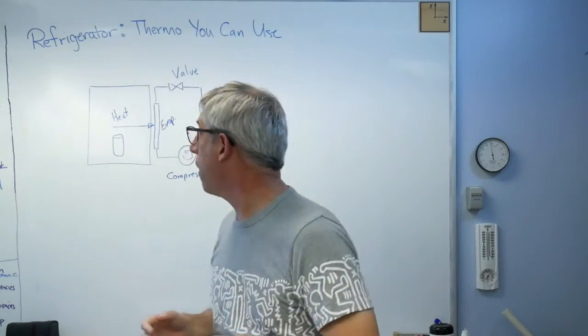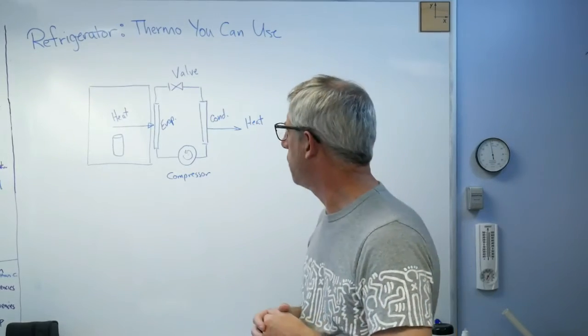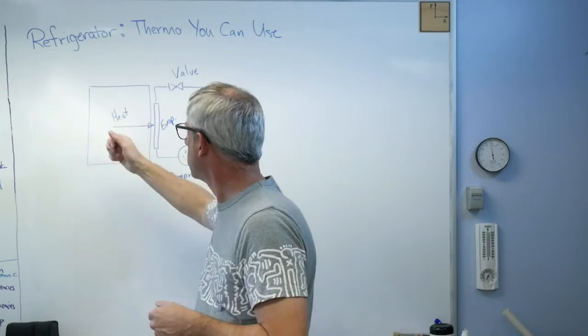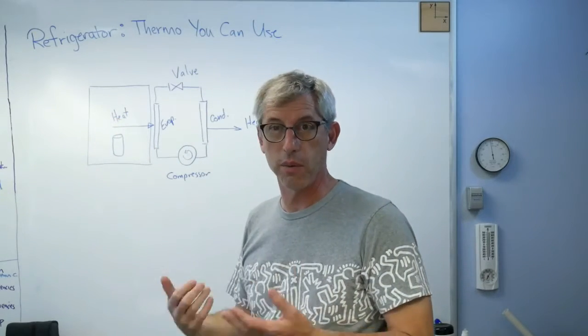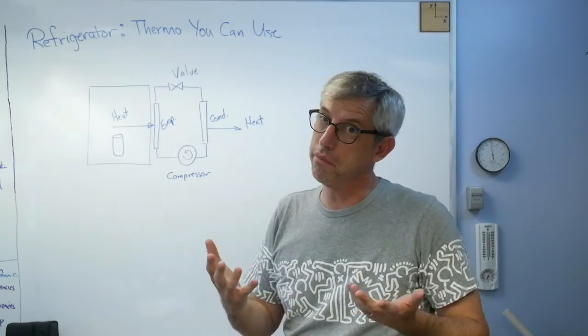So we like having cold drinks, food that doesn't spoil and stuff like that, so we have refrigerators. Well, how's this thing work? Well, basically it's a box, and I'm trying to put stuff in the box and then get the heat out of the box so that whatever's left gets cold. Take the heat away, what you got left is cold.